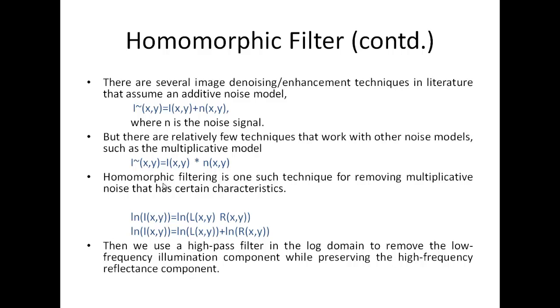Homomorphic filtering is one such technique for removing the multiplicative noise. What we do is we generally take the logarithmic values of both sides. We very well know from the logarithmic properties that if we take log of both sides then I can express log of intensity as the log of reflectance and the log of illumination. We can then apply a high pass filter in the log domain to remove the low frequency illumination component and preserve the high frequency reflectance component.